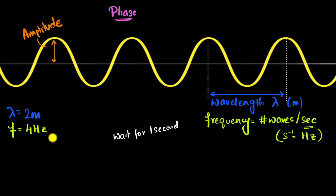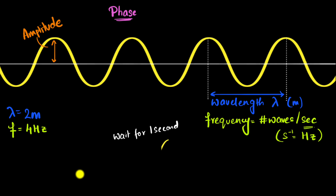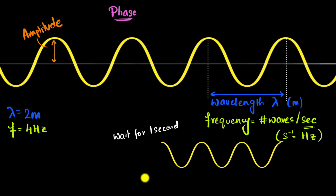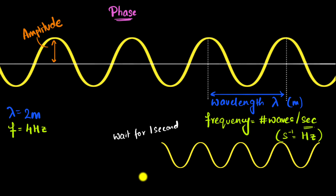In that one second, I know four waves are going to pass by. So here's wave number one — peak to peak is one full wave — then wave number two, wave number three, and wave number four. So in one second, this whole thing happened.